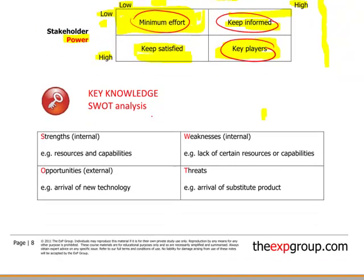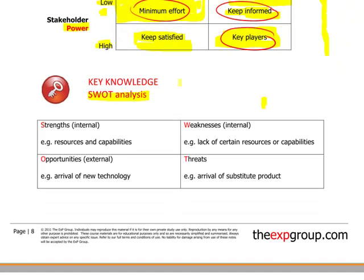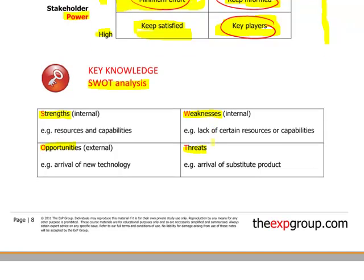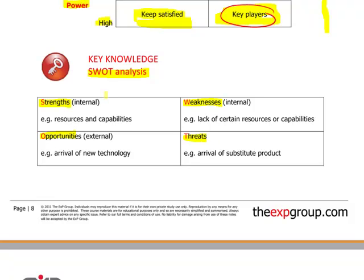Let's now look at SWOT analysis. SWOT analysis is a very well-known theory and it stands for strengths, weaknesses, opportunities, and threats. SWOT analysis looks at the strengths and weaknesses of a company — these two are internal, so it's an internal strength or internal weakness of an organisation. The opportunities and threats are external, so an opportunity applies not just to the company we're looking at but to other organisations as well. And the same with threats.